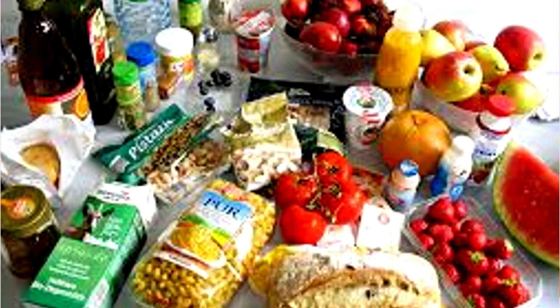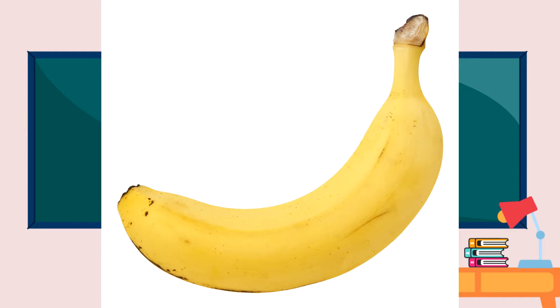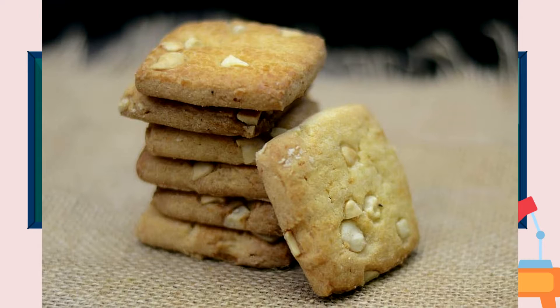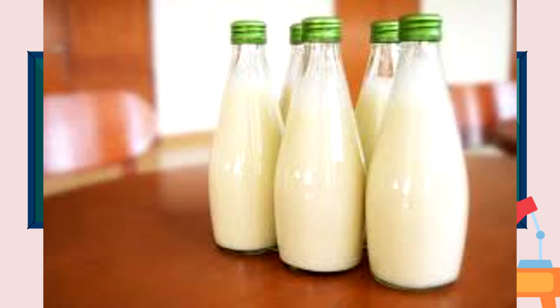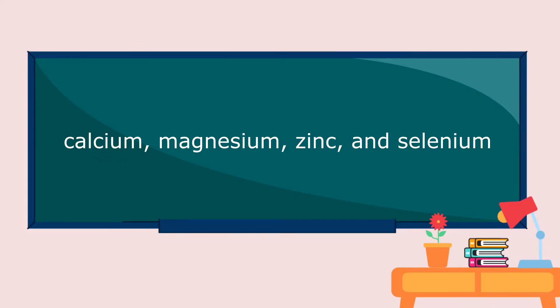There are many elements present in the food you eat. Whether it is raw like banana or processed like banana chips, biscuits, milk, and juice. These are mostly nutrients which the human body needs in order to function well. Some of these are calcium, magnesium, zinc, and selenium.